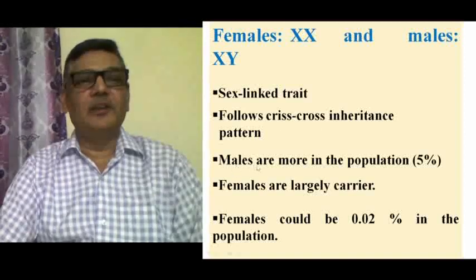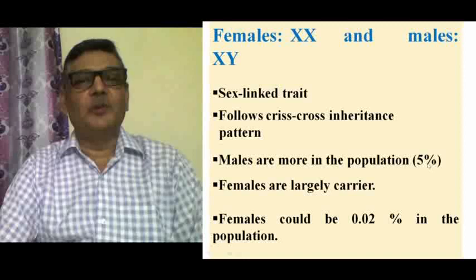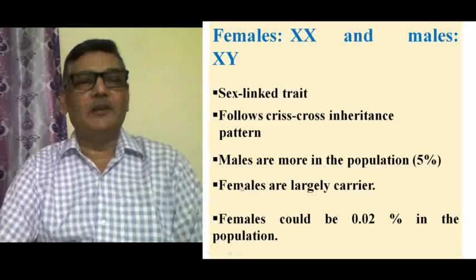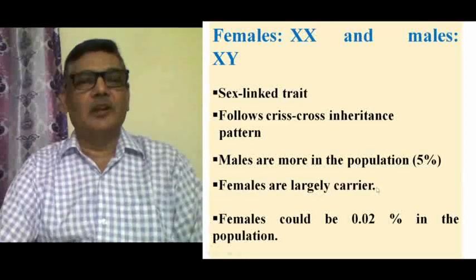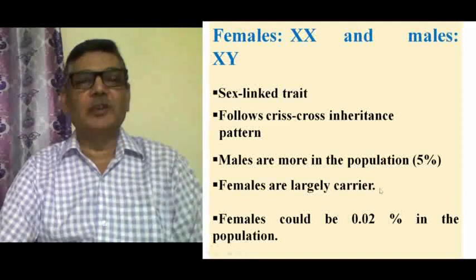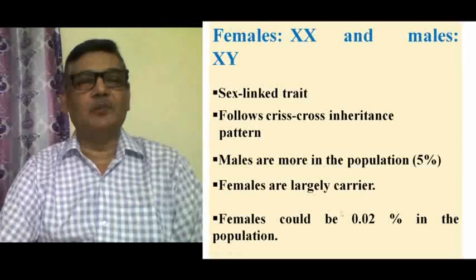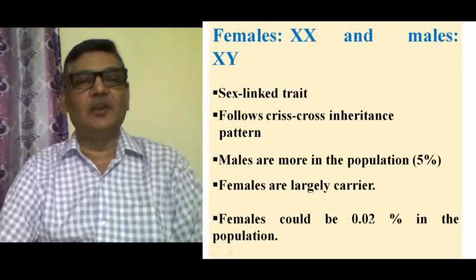Generally, males are more affected in the population. The frequency of color blind males would be around 5%, while females are largely carriers because they have two X chromosomes — one may contain the normal allele and the other the mutant allele. Color blind females are approximately 0.02% of the Indian population, so their frequency is comparatively very less.